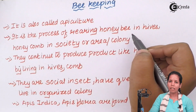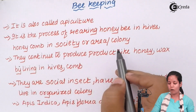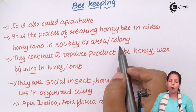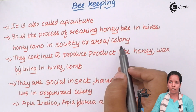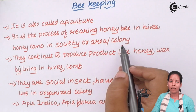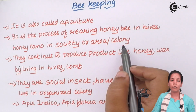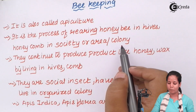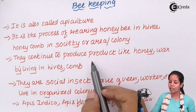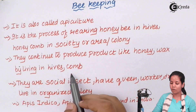Honeybees live on hives or honeycombs in social or housing colonies. Flowers contain nectar, and honeybees collect nectar from flowers; in return, they perform pollination of the flower. This collected nectar is converted into honey by the group of honeybees, and during that process, wax is produced as a byproduct in these hives or combs.